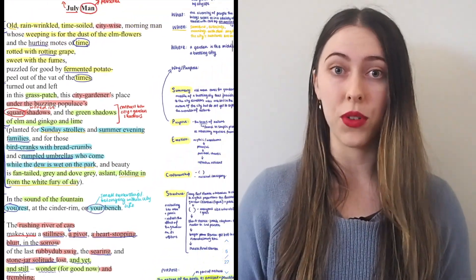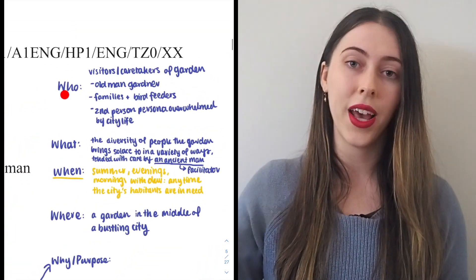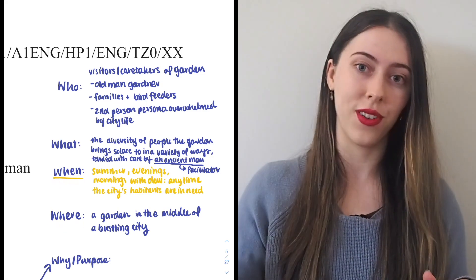I would then write out the four W's - who, what, when and where - at the top of my page and fill these out using the information that I'd summarized next to those little brackets.